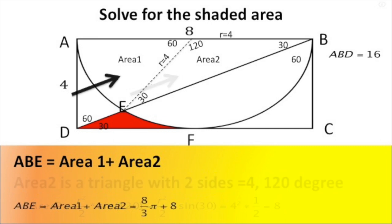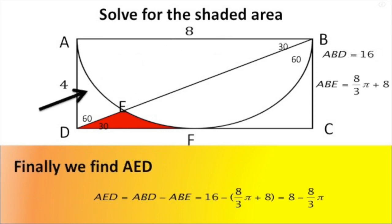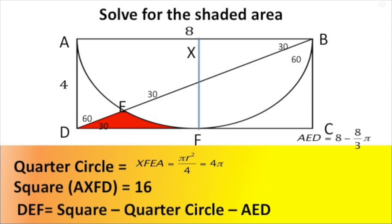Area ABE equals area one plus area two, which is 8π/3 plus eight. Now we need to find area AED. This area equals the area of triangle ABD minus the area of the part of the circle. The area of the triangle was found to be sixteen, so: sixteen minus (8π/3 + 8) equals eight minus 8π/3.